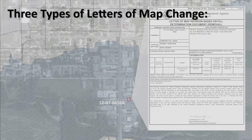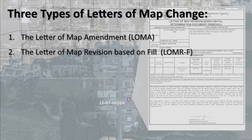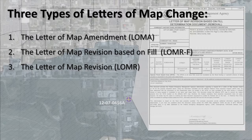The most frequently used letters of map change are the Letter of Map Amendment, or LOMA, the Letter of Map Revision Based on Fill, or LOMR-F, and the Letter of Map Revision, or LOMR.